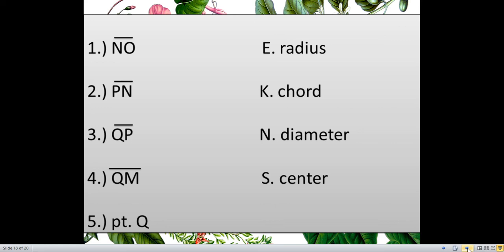And here is the 5 items. And line segment NO, you need to choose there. We have radius, chord, diameter, center. Then for number 2, line segment PN. For number 3, line segment QP. For number 4, line segment QM. Take note, there are answers that could be repeated. As you can see, we just have 4 choices. So, there should be an answer that must be repeated.